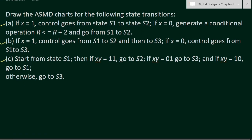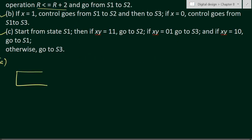The first condition is: if x equals one, control goes from state S1 to S2. If x equals zero, generate a conditional operation — r will be modified with r plus two — and go from S1 to S2. In both cases we go from S1 to S2, but when x equals zero we must modify r. First, draw the state box S1, writing S1 in the upper left-hand corner and defining a default reset_b signal.